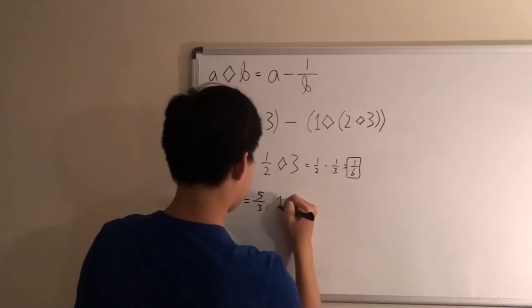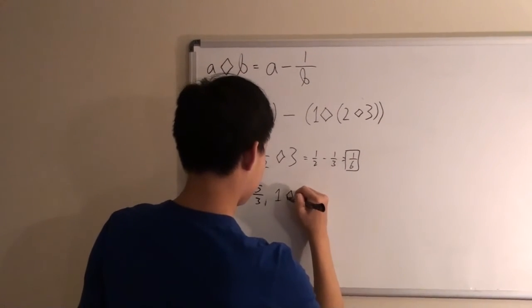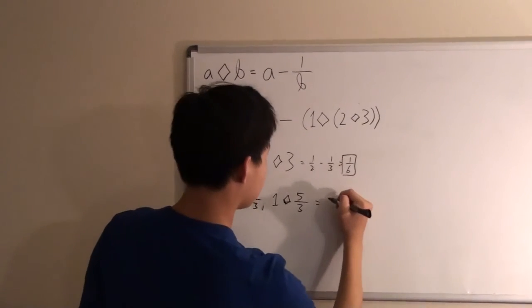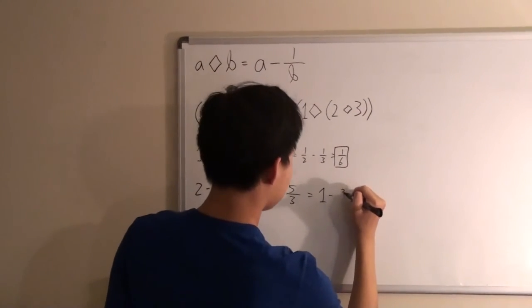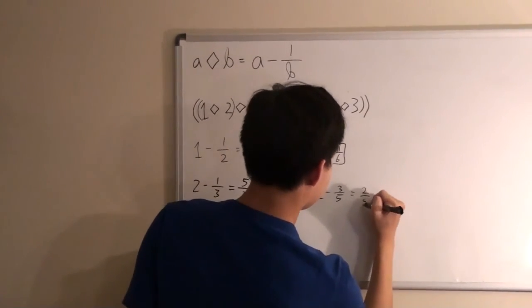And then we do 1 diamond 5 over 3, and that would give us 1 minus 3 over 5, and that equals 2 over 5.